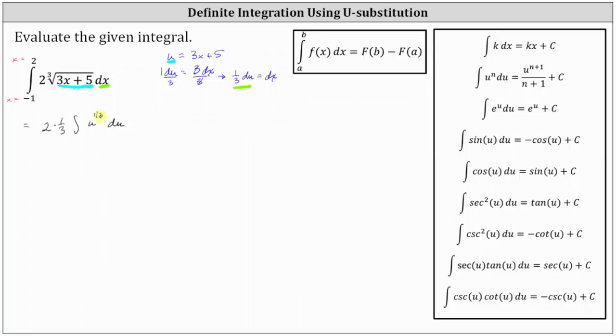And now because we have the integral in terms of u, we need to determine the new limits of integration. Notice when x is equal to negative one, u is equal to three times negative one plus five, which is positive two. And then when x is equal to positive two, u is equal to three times two plus five, which is 11.